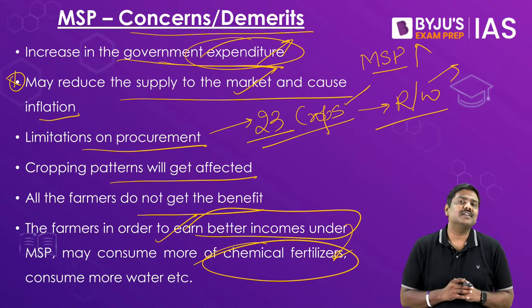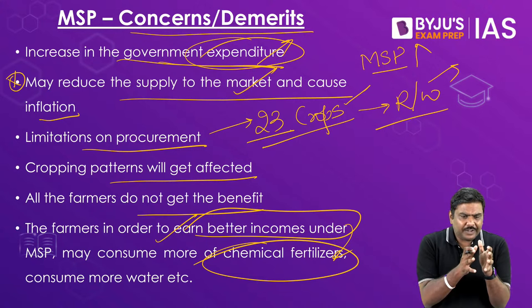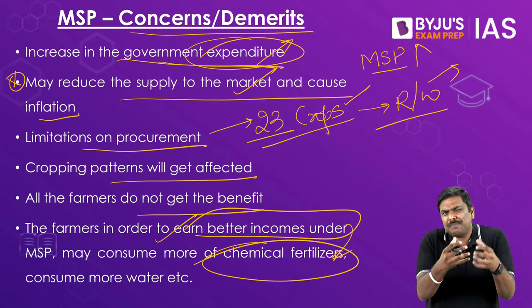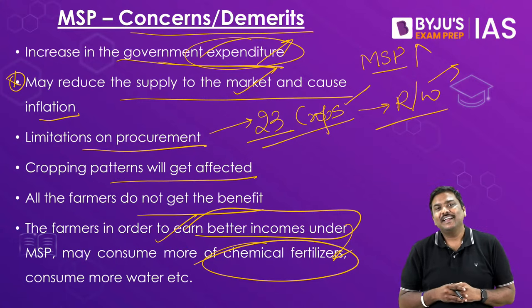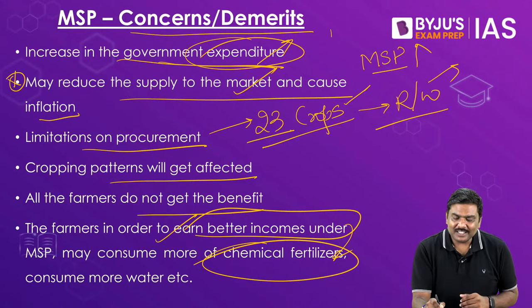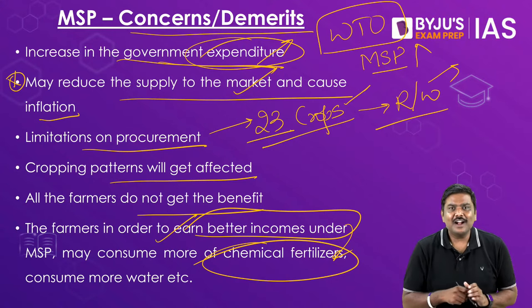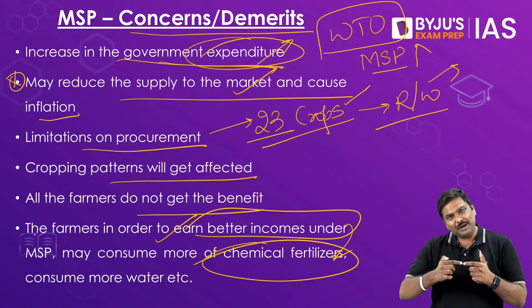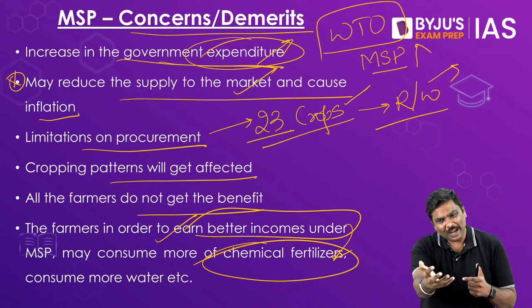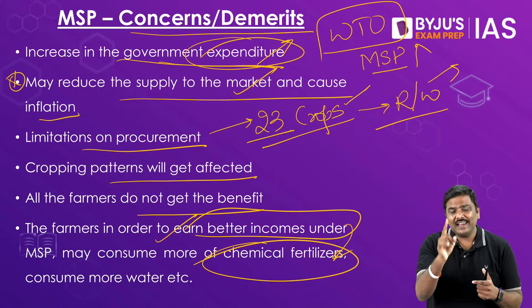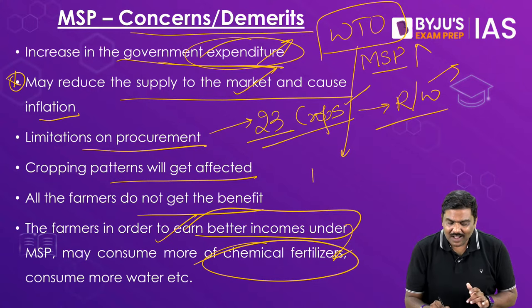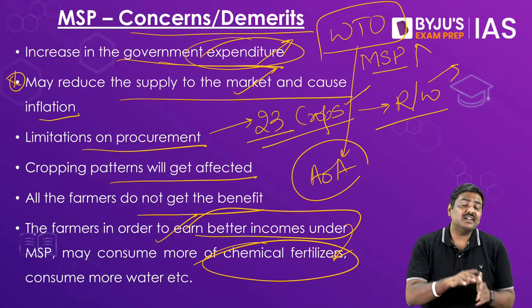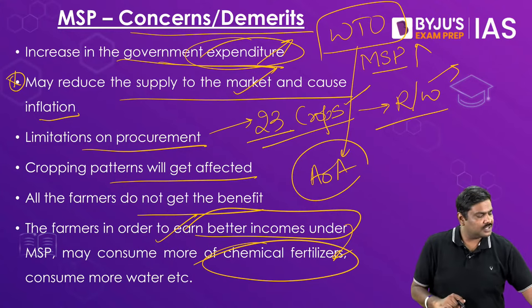One more very important concern: if the Government of India provides more MSP and procures more crops, they could end up violating WTO norms. Under the WTO Agreement on Agriculture, providing more MSP and procuring crops beyond certain limits would violate its provisions. These are some of the concerns and issues related to the concept of MSP.